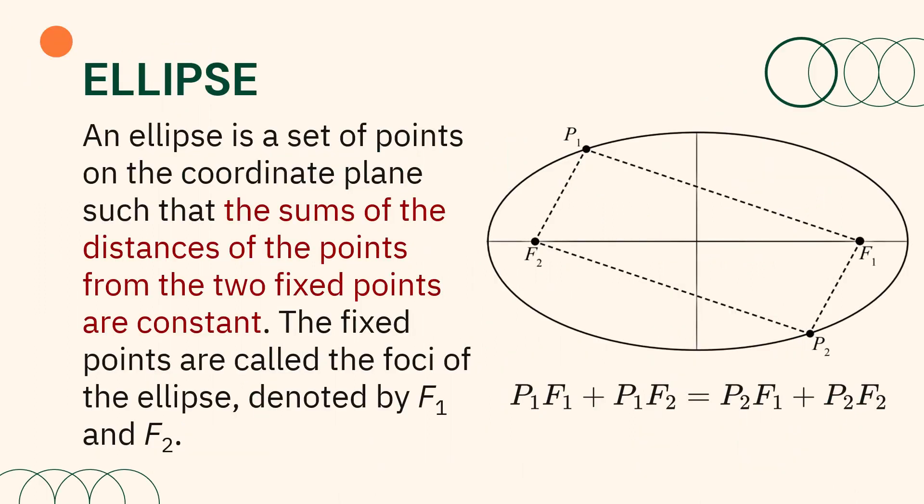We have defined the ellipse as a set of points on the coordinate plane such that the sums of the distances of the points from the two fixed points are constant. The fixed points are called the foci of the ellipse, denoted by f sub 1 and f sub 2.